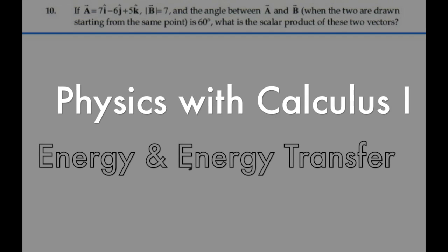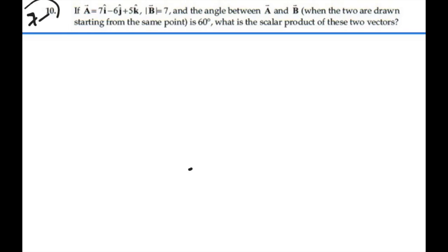Here's problem 7.10. If A is equal to 7i minus 6j plus 5k, and the magnitude of B is 7, and the angle between A and B when the two are drawn starting from the same point is 60 degrees, what is the scalar product of these two vectors?